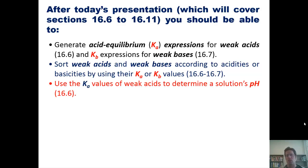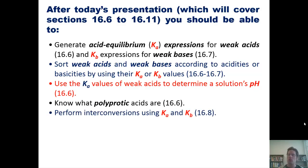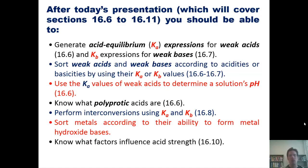Fourth, know what polyprotic acids are. Fifth, perform interconversions using Ka and Kb. Sixth, sort metals according to their ability to form metal hydroxide bases. And seventh, know what factors influence acid strength. And lastly, we will skip Sections 9 and 11 from this chapter. That's the lineup.